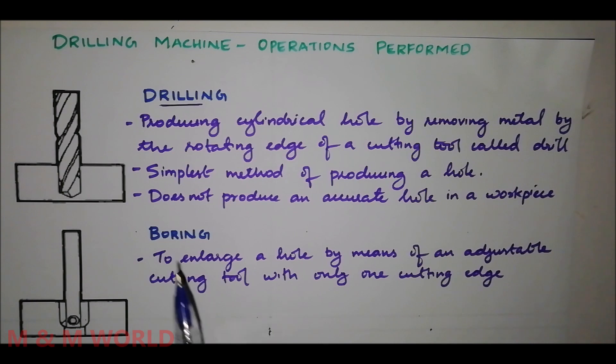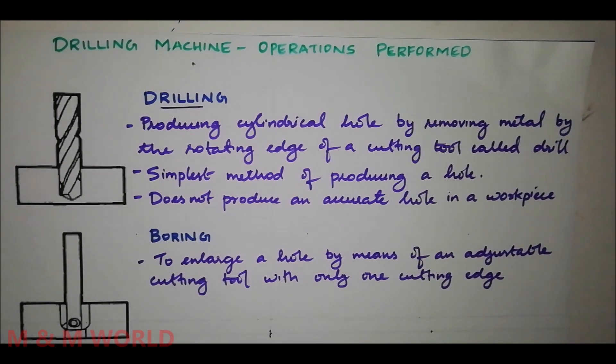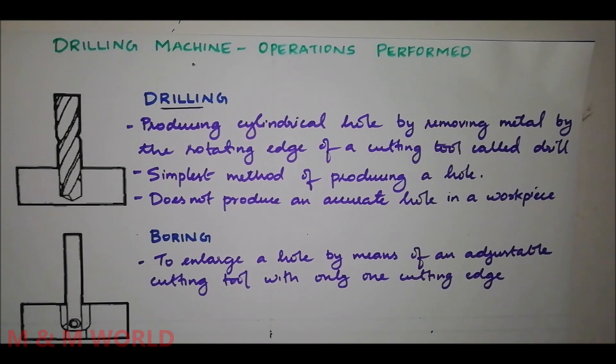The first one is drilling. Drilling is the operation of producing a cylindrical hole by removing metal by the rotating edge of a cutting tool called the drill. Standard drill bits are available in various sizes and to drill a hole the drill bit is rotated at very high RPM.